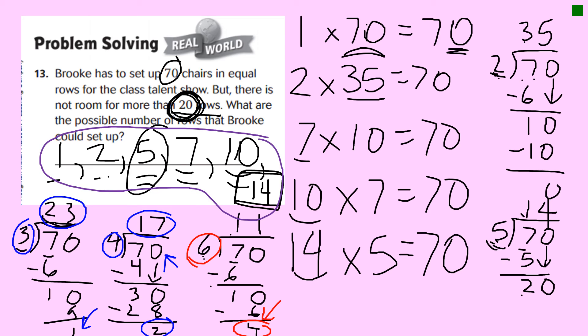Fourteen is the final factor of seventy. So Brooke can make her rows - one row, two rows, five rows, seven rows, ten rows, or fourteen rows. And why didn't we use these factors of seventy? Because the problem says she can only make twenty rows. That was a whopper, huh guys? You are doing excellent.